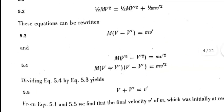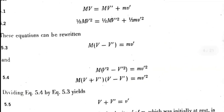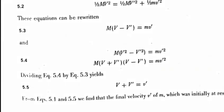For kinetic energy, capital M is common, then V capital square minus capital V prime square equals small m small v prime square. We can factor this as (V plus V prime)(V minus V prime).